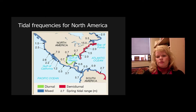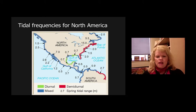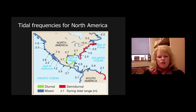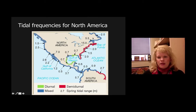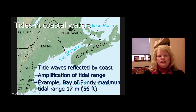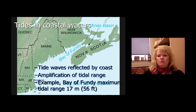Tidal frequencies for North America are interesting because they don't follow a simple rhyme or reason. Looking at the diagram, you can see how the tide comes in and out for each area dramatically in terms of location. One area should stand out as substantially different from the rest — and it's the Bay of Fundy. Tide waves are reflected by the coastline of Nova Scotia, which amplifies the tides, giving the Bay of Fundy a tidal range of 56 feet.